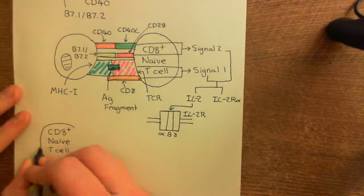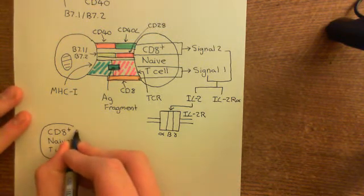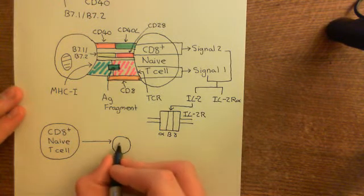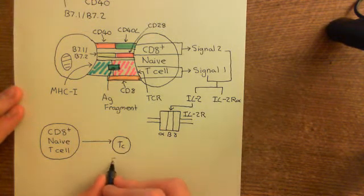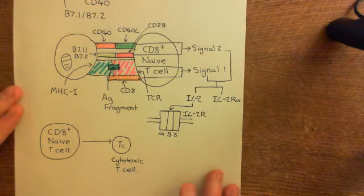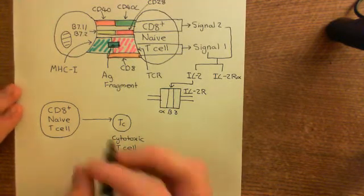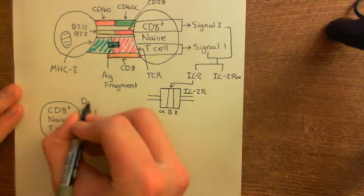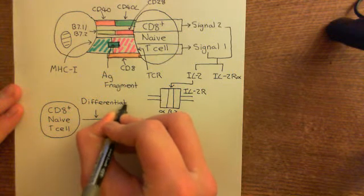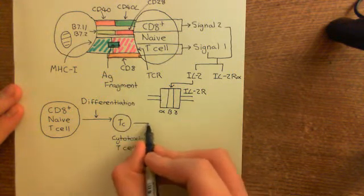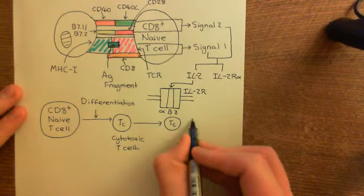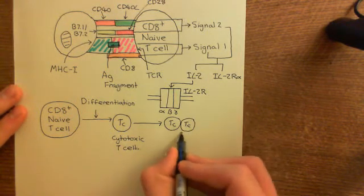The CD8-positive naive T-cell — all still within the lymph node — is going to undergo differentiation to become what's called a cytotoxic T-cell, abbreviated as T subscript C. This process of going from a CD8-positive naive T-cell to a cytotoxic T-cell is differentiation. Then this cytotoxic T-cell will proliferate extensively within the lymph node, generating a large population of cytotoxic T-cells.